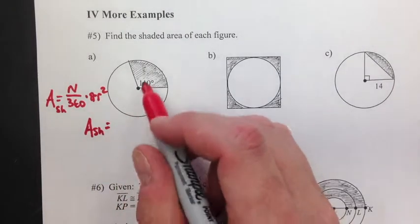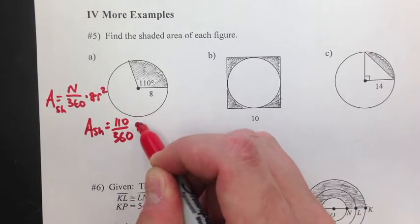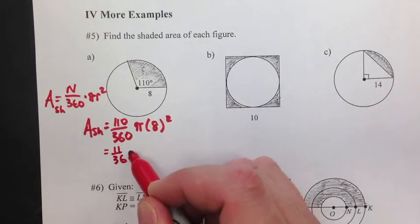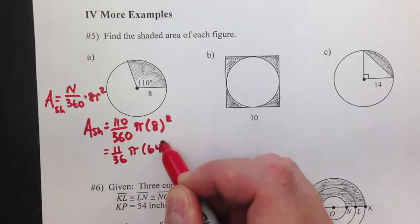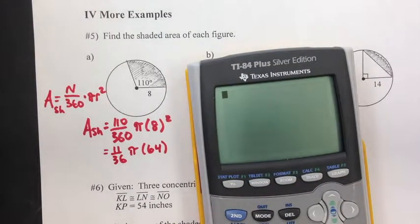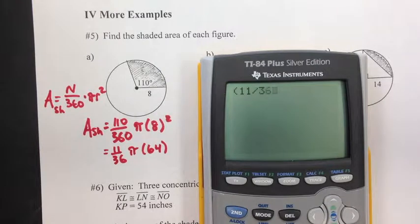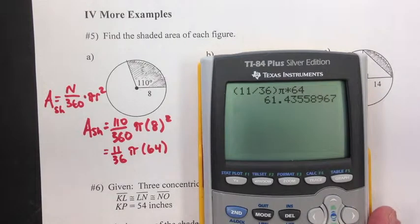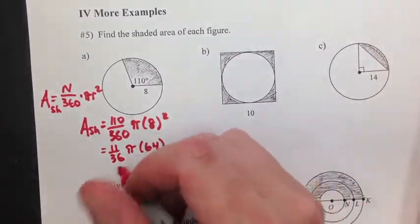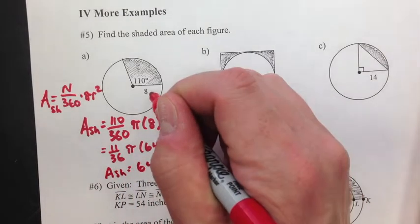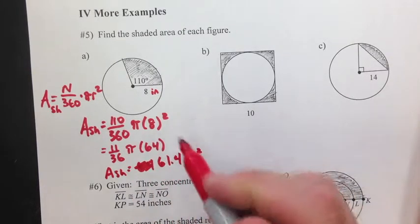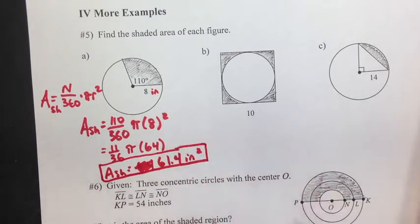Area shaded equals 110 over 360 times pi times 8 squared. Now we can reduce this fraction. That's 11 over 36 times pi times 64. I'm just going to write this as a decimal. So I'm going to type 11 divided by 36 pi times 64. 61.4, that is the shaded area. So area shaded equals 61.4 inches squared. And that's good. That's my answer.